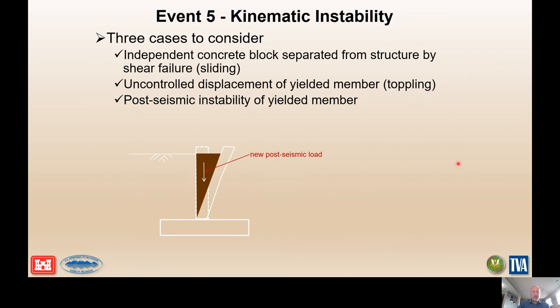The last node is kinematic instability — whether the section is more likely to slide or topple based on its configuration and damaged state. Post-seismic considerations also need to be addressed: if you had a yielded section with a permanently deflected wall and the backfill fills in behind it, you might have some eccentricity relative to the stem of the wall that would induce new post-seismic loading on the section.